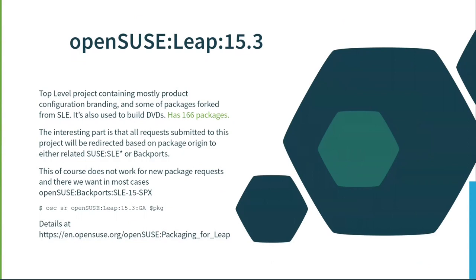Details about openSUSE Leap 15.3: as mentioned, there are only about 160 packages. It's the top-level project containing mostly product configuration, branding, and some work packages from SLE. We use it for building DVDs — it's sort of an umbrella project that takes artifacts from SLE and backports and makes deliverables. One interesting part is submit request mirroring: if you are contributing to an existing package and you submit something against openSUSE Leap — for example, OSR openSUSE Leap 15.3 your-package — it will detect where the package is coming from and the submission will be redirected there. You don't have to think about where it is.